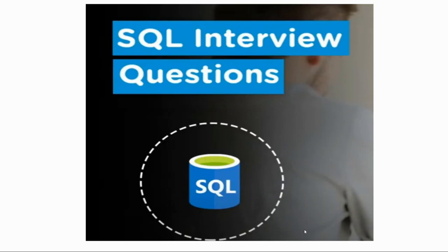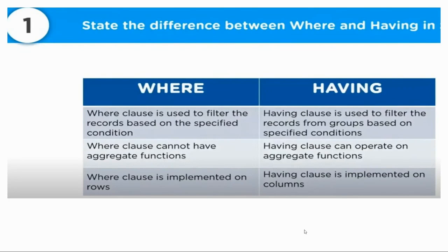SQL interview question: what is the difference between WHERE and HAVING in SQL? The WHERE clause is used to filter records based on a specified condition. The HAVING clause is used to filter records from groups based on specified conditions. WHERE clause cannot have aggregate functions, whereas HAVING clause can operate on aggregate functions. WHERE clause is implemented on rows; HAVING clause is implemented on columns.